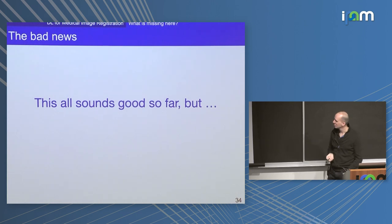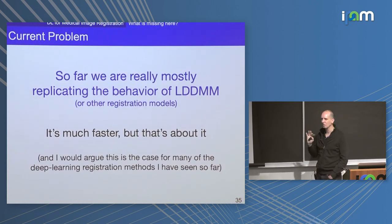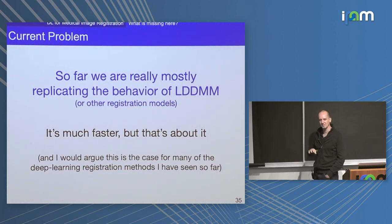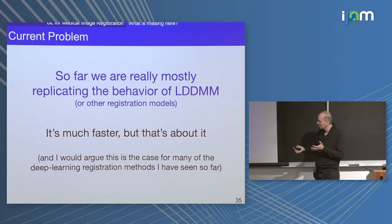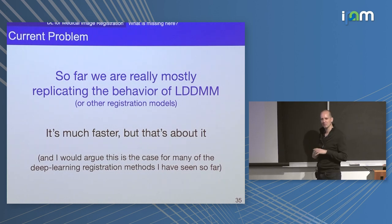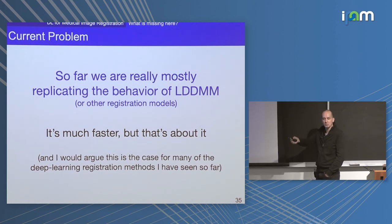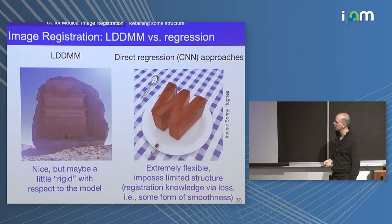So it all sounds pretty good, but the problem is that so far we're really only replicating the behavior of LDDMM or other registration models — just faster. The performance is not that much better at this point. The question is: can you do something a little bit more interesting? Either increase performance — and I think you can — or create a more flexible model that, even if overlap measures aren't better, teases out additional information that other registration models don't have available.